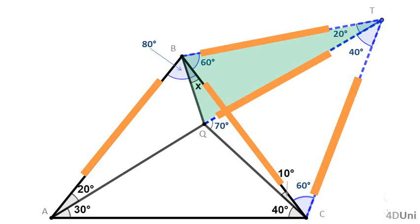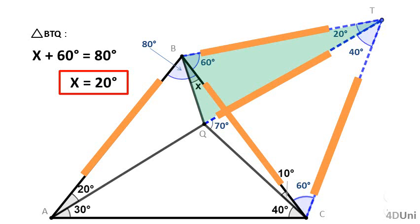Finally, focus on triangle VTQ. It is isosceles because TQ is equal to TB, so it has two equal measure angles. In triangle VTQ, the measure of angle VTQ is 20 degrees, then the measures of the other two should add up to 160 degrees. Since they are both equal, each should be 80 degrees. Then we can say that x plus 60 degrees is 80 degrees, from which we obtain the value of x — it is equal to 20 degrees.